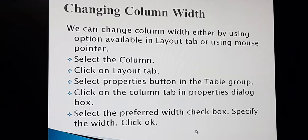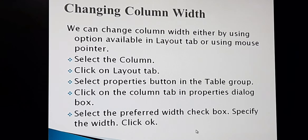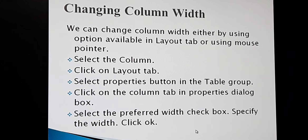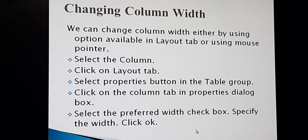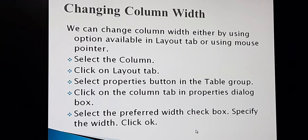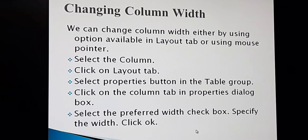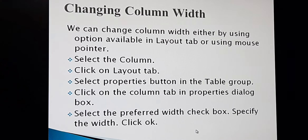Another way is to go to the Layout tab — just like the Home tab or Insert tab, the Layout tab is in the main menu. Once you select the Layout tab, it will show different buttons on the screen. You need to select the Properties button. Once you click the Properties button, it will show you the same Table Properties dialog box that you saw when changing the row height. Then you come to the Column tab and change the column width.